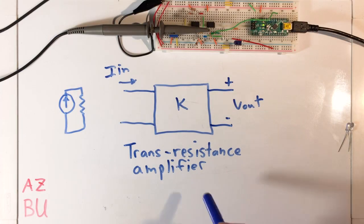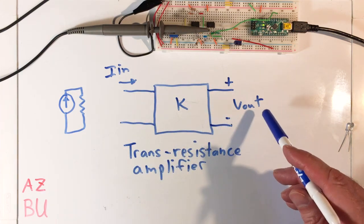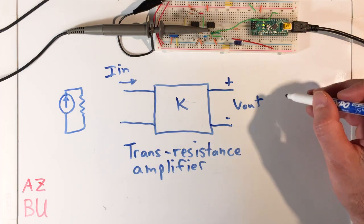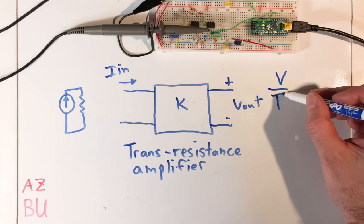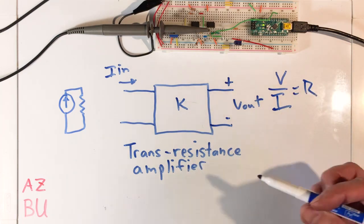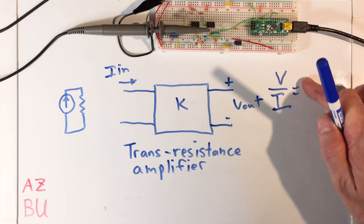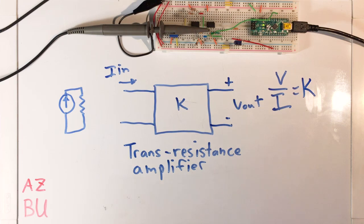This is an introduction to the trans-resistance amplifier. It takes a current input and transforms it into a voltage output. The reason it gets its name: if we think of transfer function naming where you have output divided by input, if we have a voltage on the output divided by a current on the input, V over I equals R, and hence we get trans-resistance. It has some kind of gain associated with it, so we usually say that V over I equals K.